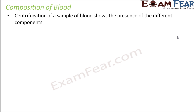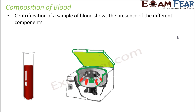You take a sample of blood in a test tube. This is how a centrifuge looks — at the center you have the test tube holders, and in these test tube holders you insert the test tubes with blood samples. When you start the centrifuge, it starts rotating very fast at a very high speed.